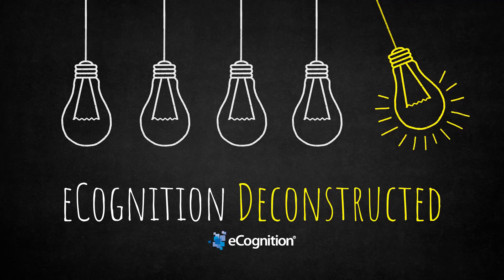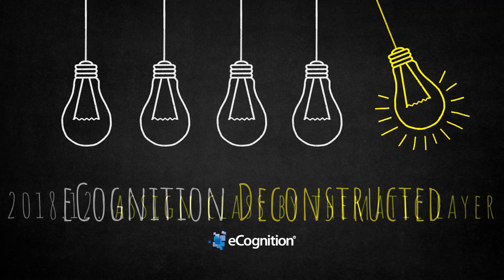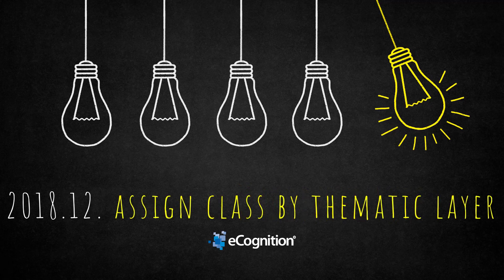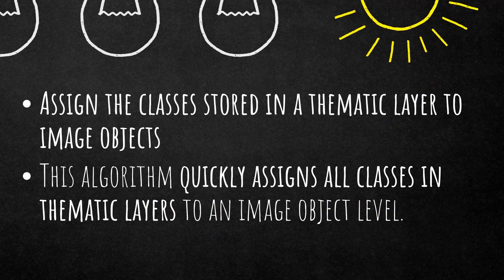Hello everyone and welcome to this eCognition Deconstructed video. Today we're going to have a look at an algorithm called 'Assign Class by Thematic Layer.' This algorithm is very helpful if you want to assign the classes stored in your thematic layer to your image objects within eCognition. It's a very fast algorithm and I'm going to have a few examples.